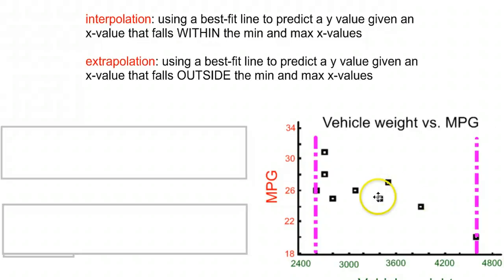If we try to predict a number, let's say a car that's only 2000 pounds or a car that's 5000 pounds, when you start trying to predict those values outside of the range of your data, you are extrapolating.